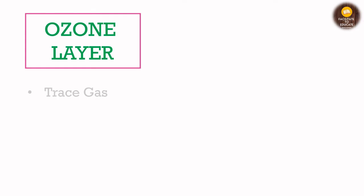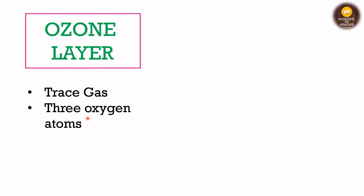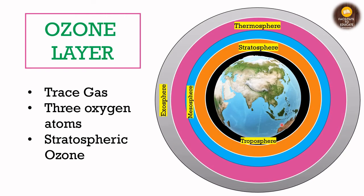Ozone is a trace gas — it is present in very small quantity in the atmosphere. If there are 10 million molecules of air around us, only three of those molecules will be of ozone. It is the combination of three oxygen atoms, O3. Whenever we talk about the ozone layer, we are specifically talking about ozone present in the stratosphere. The atmosphere has five layers: first is the troposphere, which also contains some ozone that is man-made and harmful for us.